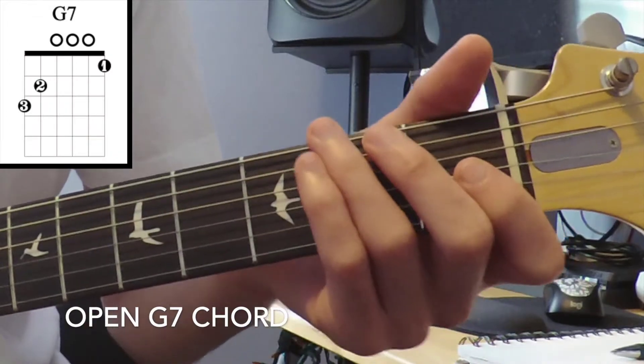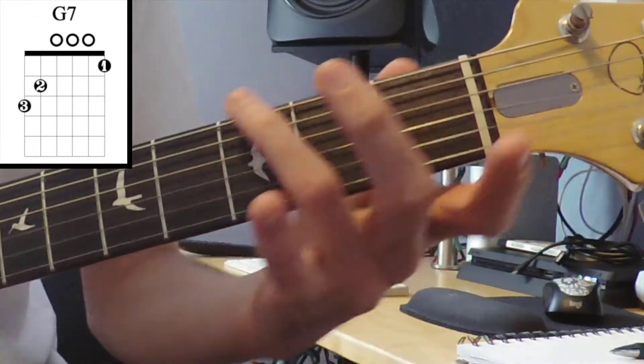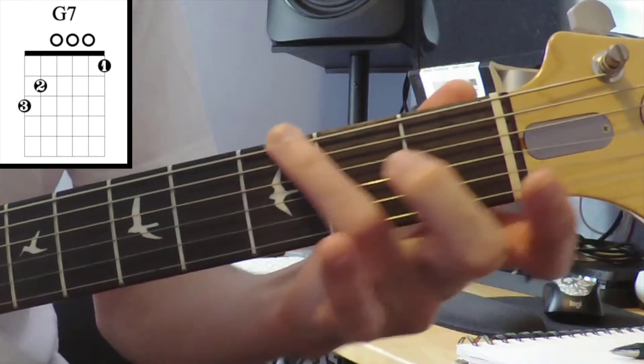Okay, the G7 chord. I'm gonna start with our ring finger put on the third fret of the low E string.